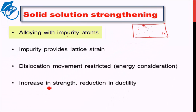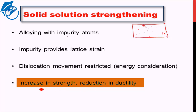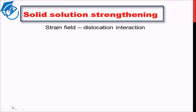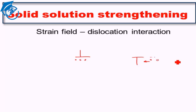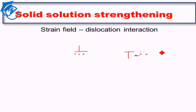The result of solid solution strengthening is an increase in strength and a reduction in ductility. The strain field-dislocation interaction means: if a dislocation is present and solute particles are nearby, the solute particles are attracted to the extra half-plane region and will pin down the dislocation, preventing further motion. Conversely, if the dislocation approaches solute particles with matching compressive strain fields, it will be repelled and cannot move in that direction. This strain field due to the solute particle and the dislocation interaction leads to solid solution strengthening.